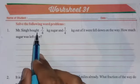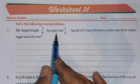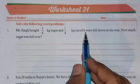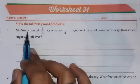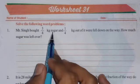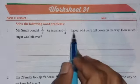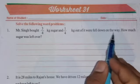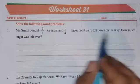Mr. Singh bought 3/4 kilogram sugar and 1/4 kilogram of it fell down on the way. So Mr. Singh purchased 3/4 kilogram of sugar, out of which 1/4 kilogram fell down on the way. How much sugar was left over?